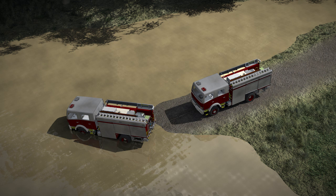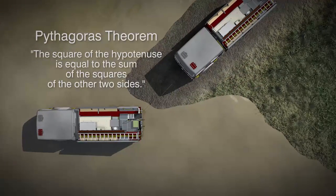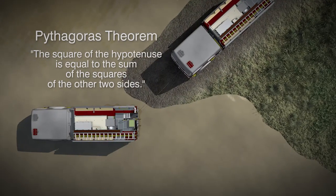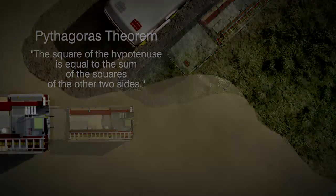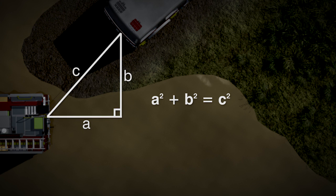These calculations can then be used to understand the forces at play between the two vehicles. Pythagoras theorem states that the square of the hypotenuse — the side opposite the right angle — is equal to the sum of the squares of the other two sides, or a² + b² = c². If we work out the length of c, we know how long our recovery strap will need to be in this scenario.